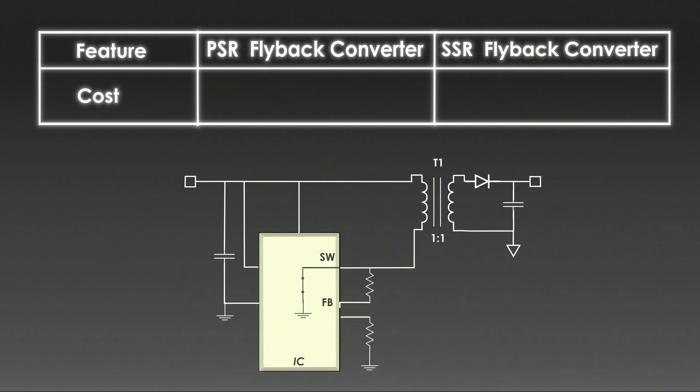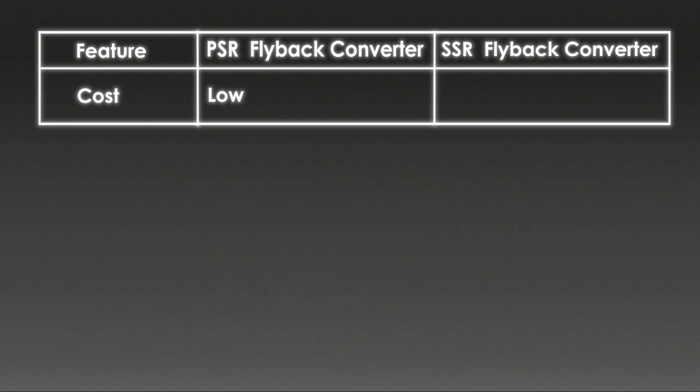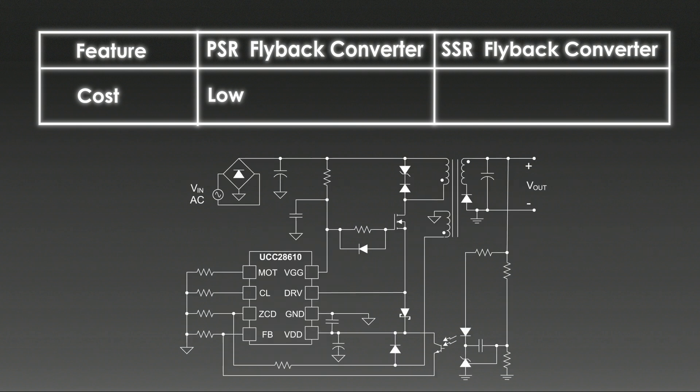The PSR flyback converter has lower cost and fewer components. It reduces the manufacturing complexity and improves reliability by removing potential failure points like optocoupler degradation. SSR flyback converter on the other hand has higher cost and more components, which include optocoupler, secondary side reference and associated passive components. These extra components increase the bill of material and take more PCB space.